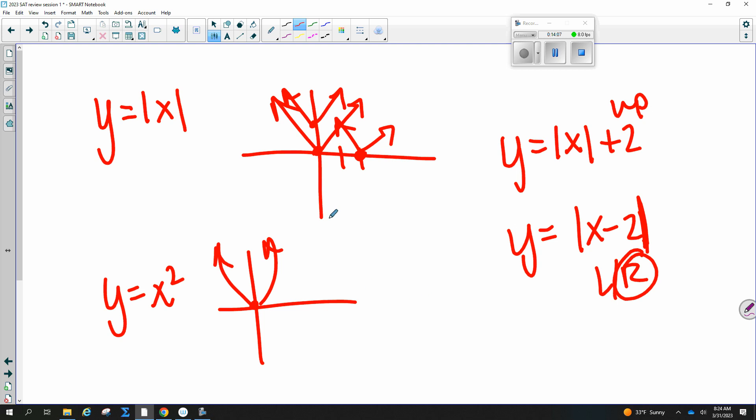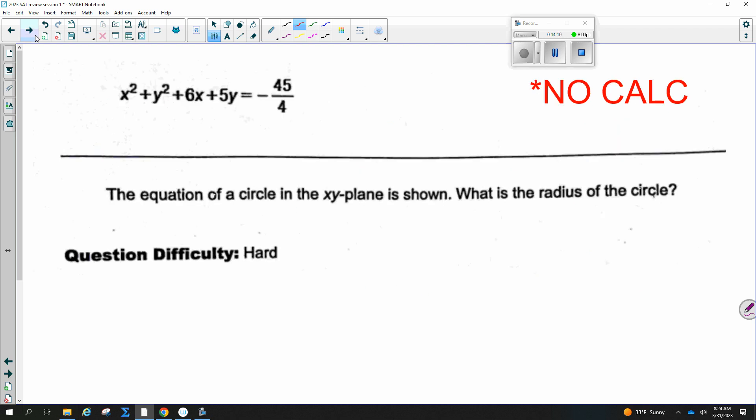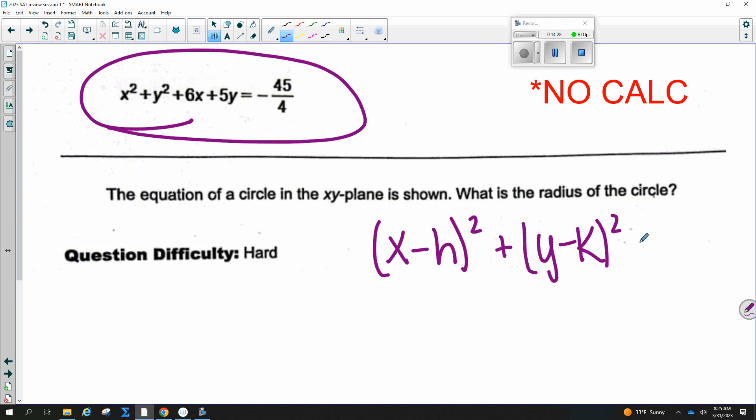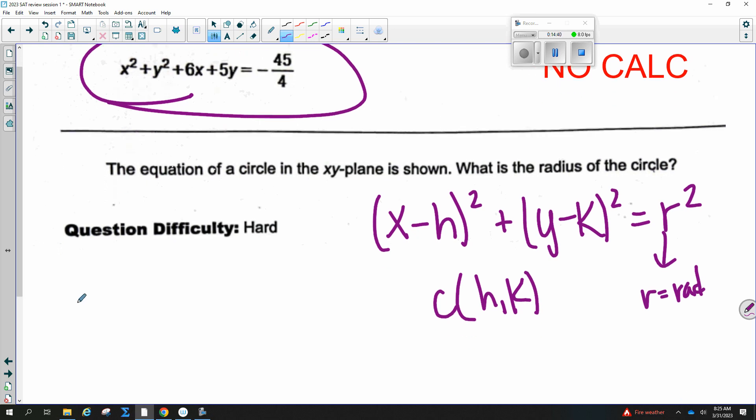The equation of the circle in the XY plane is shown. What is the radius of the circle? So we need to complete the square. You also need to know the formula for circles. I've seen this on the SAT a lot. We do (X minus H) squared plus (Y minus K) squared equals R squared. And so the center of your circle is always H, K. And then R is your radius. So you'd have to square root it or whatever. So what I need to do is complete the square and put it in this form. So you want to put your X stuff together plus a space and then your Y stuff together.